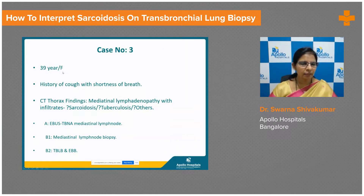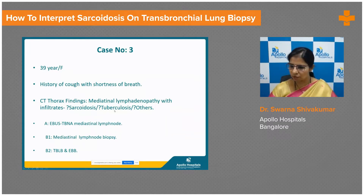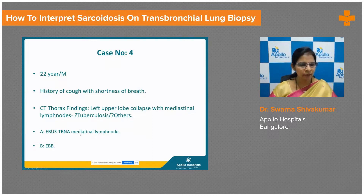A 39-year-old female with history of cough and shortness of breath. CT thorax revealed mediastinal lymphadenopathy with lung infiltrates, suspecting granulomatous etiology — either sarcoidosis or tuberculosis. This patient had been subjected to EBUS TBNA of mediastinal lymph node and also endobronchial biopsy.